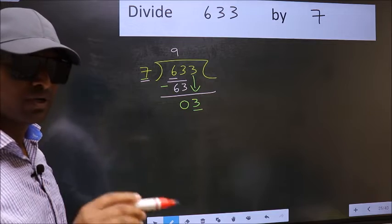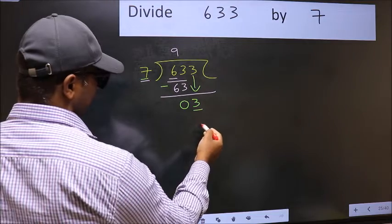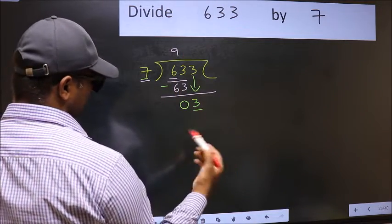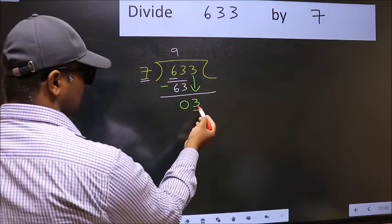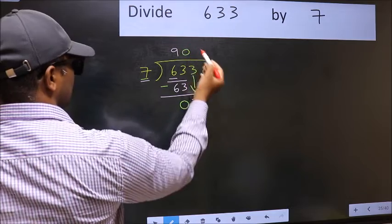Instead, what you should think of doing is, what number should we take here? If I take 1, we will get 7. But 7 is larger than 3. So what we should do is we should take 0.